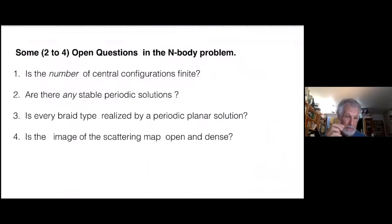Here are the questions. I'm going to read them, but I'm only going to do two. Is the number of central configurations finite? Are there any stable periodic solutions at all? Is every braid type realized by a periodic planar solution? And is the image of the scattering map open and dense? Today, I'm just going to do one and four. Because if I try to do all four, it won't be a pleasant talk for me or you.